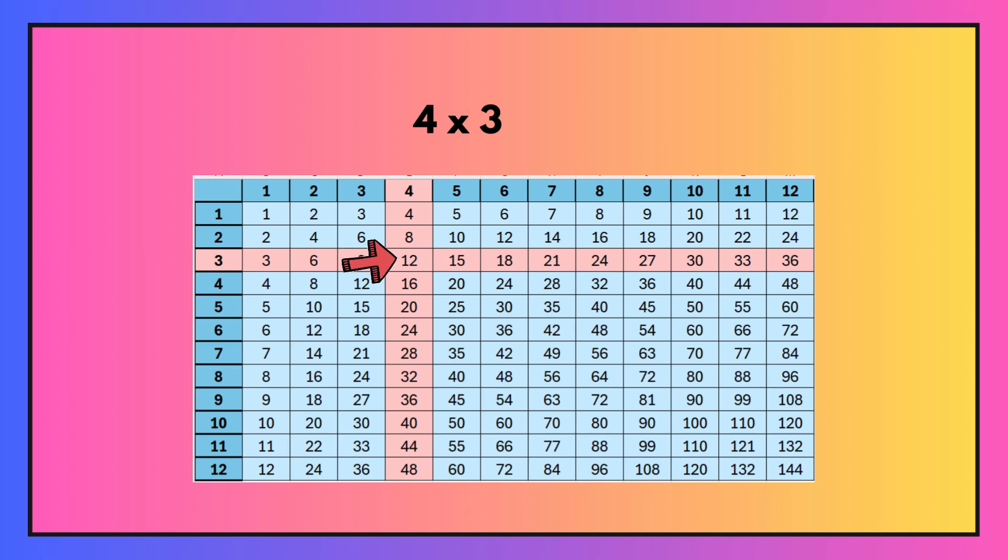So here we have four times three. I've selected four from the top and three from the side and if you follow them both along and down you can see that they meet at number 12 and that is your answer to four times three, 12.